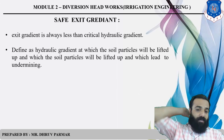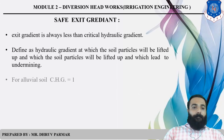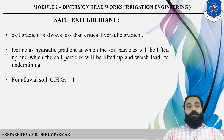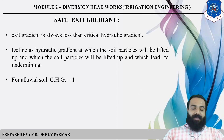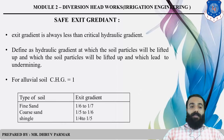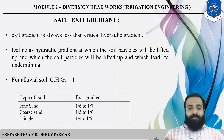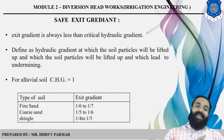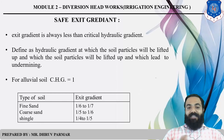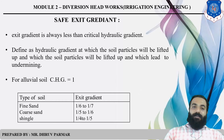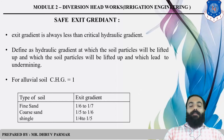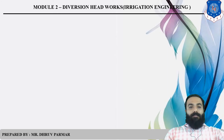For safe exit gradient: the exit gradient must remain below the critical hydraulic gradient, which means the gradient at which soil particles are lifted up and undermining occurs. For alluvial soil, the critical hydraulic gradient is always 1. There are three types of soil: fine sand, coarse sand, and shingle — each with its own gradient value.